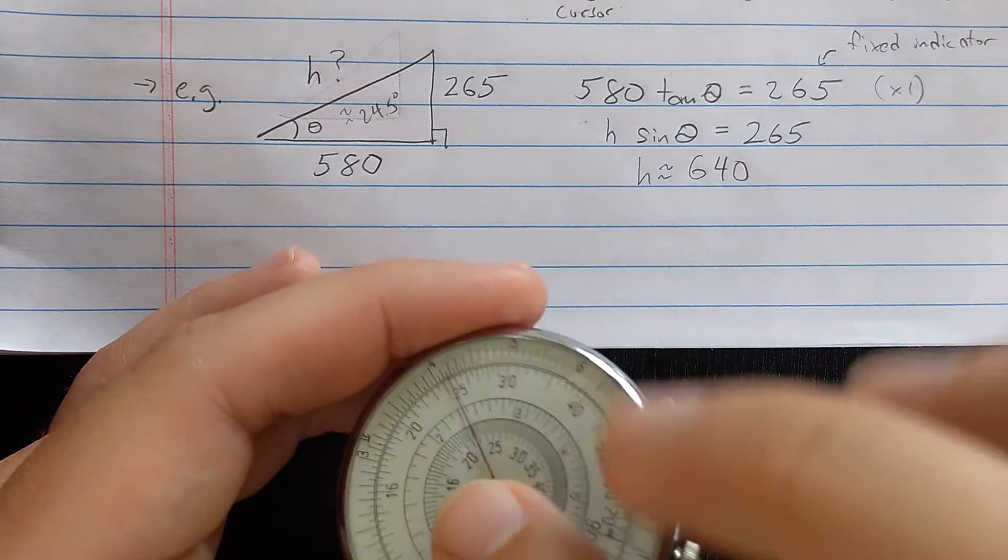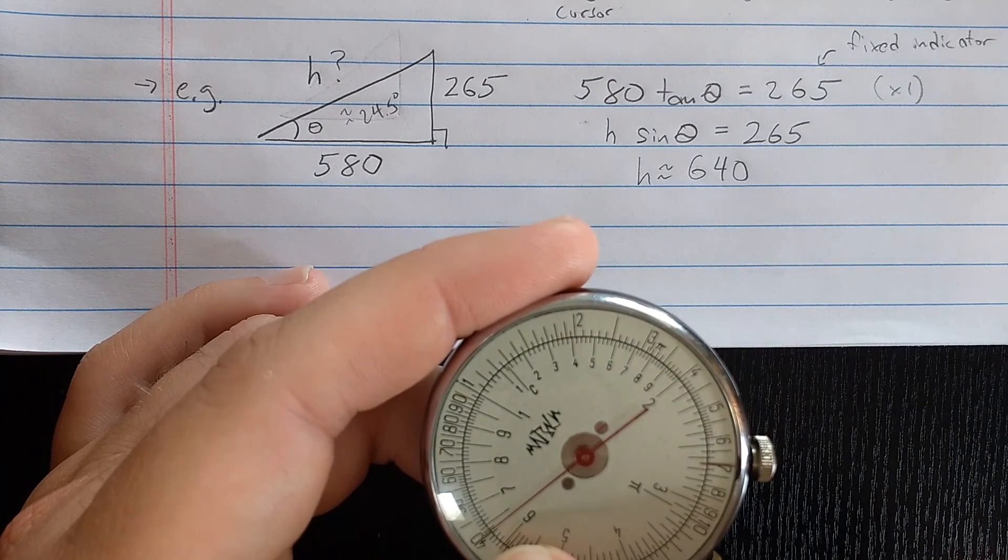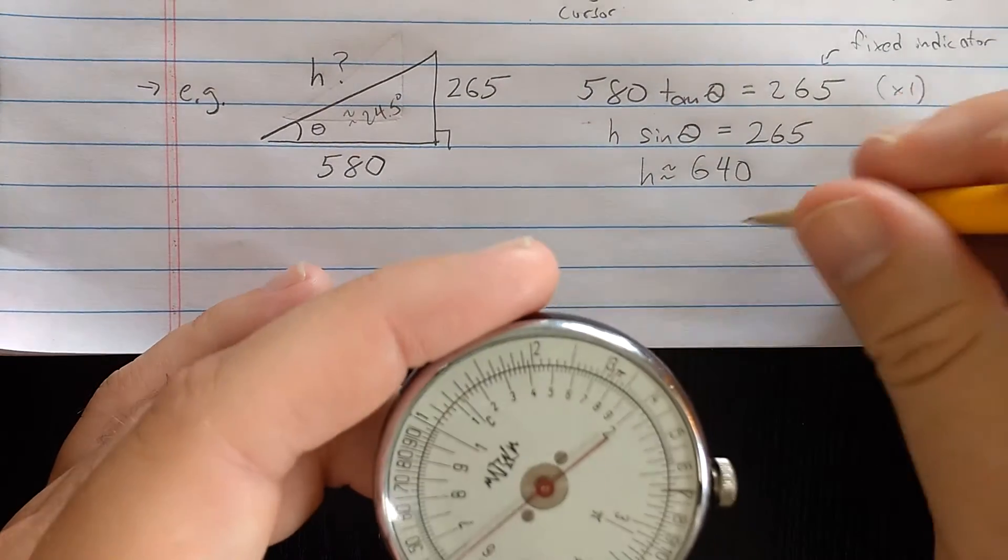So all I need to do to solve this proportion is to move the needle to sine of 24.5, which is there. Then when I flip, H should be reading at the needle. And I see about 64, so 640. It's that simple.